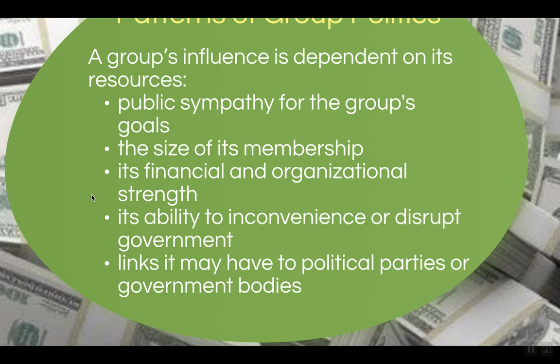Interest groups can also be defined by their ability to inconvenience or disrupt government — think of protesters who can use their passions to try to get their way, sometimes posing problems for what the government would like to do. Finally, interest groups may find they have links to political parties or government bodies. In the United States, they typically align with one of the major parties, but some will seek support from both Democratic and Republican politicians alike.